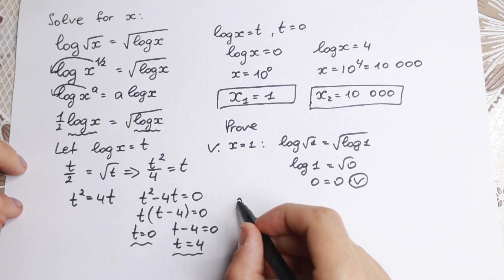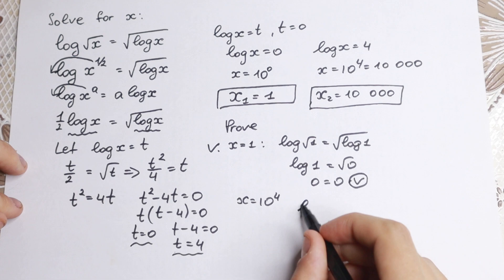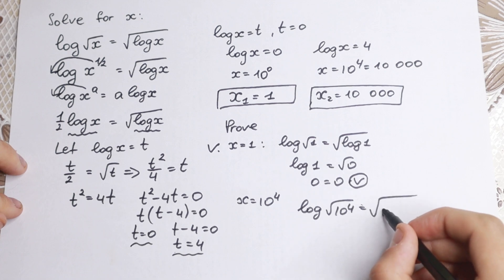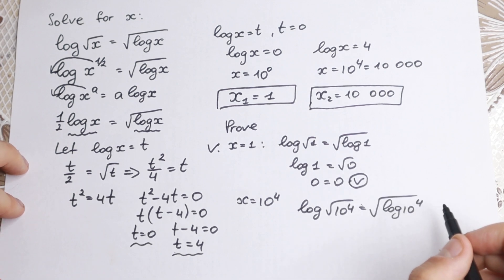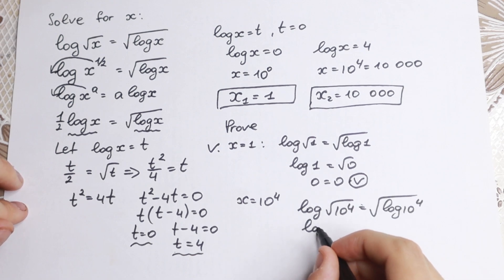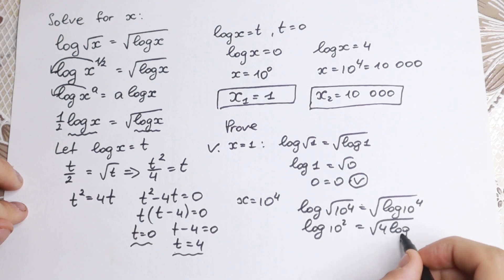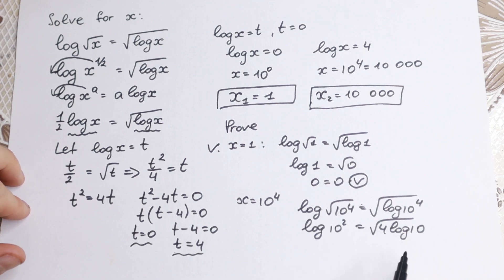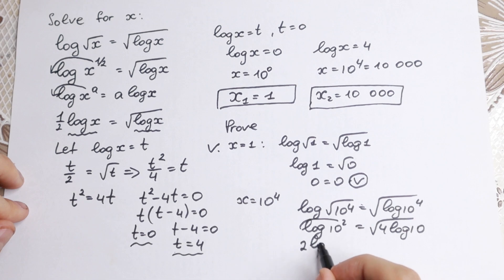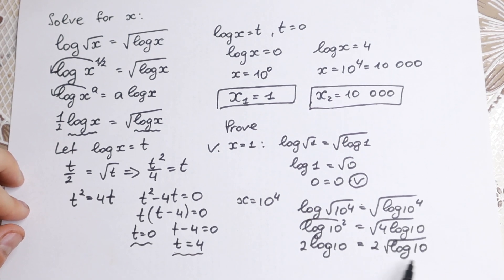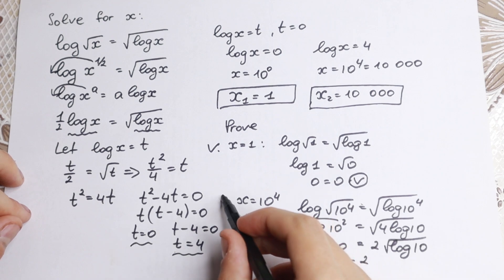Now let's check x equals 10 to the fourth power. We have logarithm squared of 10⁴ equal to square root of logarithm 10⁴. Taking the square root gives logarithm 10² equal to square root of 4 times logarithm 10. So 2 logarithm 10 equals 2 times square root of logarithm 10, and since logarithm 10 equals 1, we get 2 equals 2 — absolutely correct.